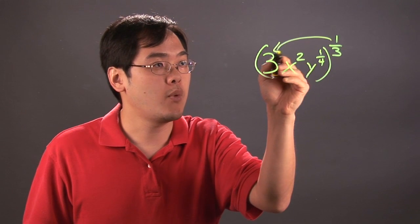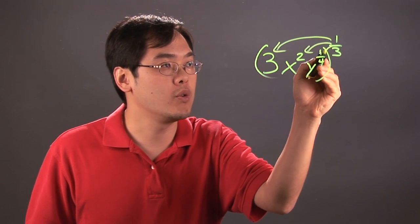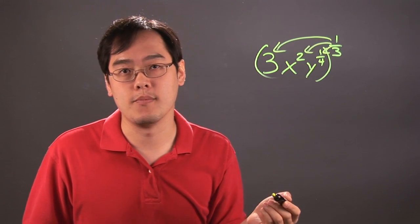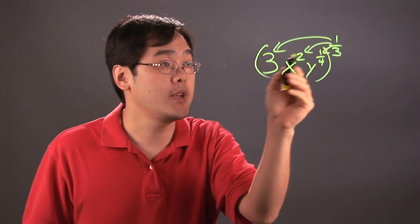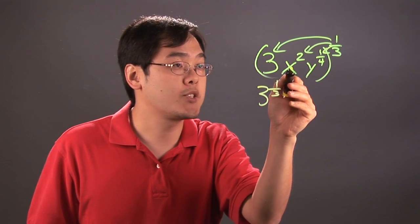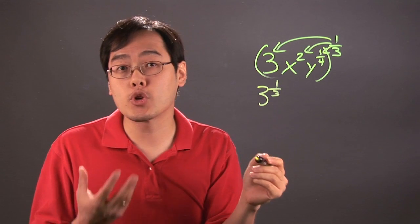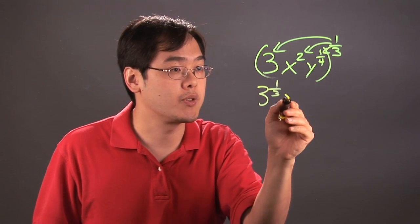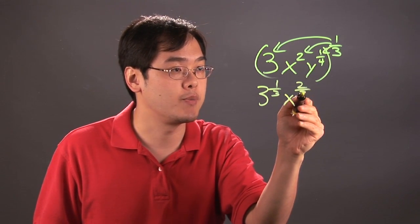So take that one-third and you're kind of distributing by every term exponent-wise. So, 3 to the one-third power is 3 to the one-third. Now, x squared to the one-third power, what you're doing is you're multiplying that. So, 2 times one-third is going to be two-thirds, so it would be x to the two-thirds power.